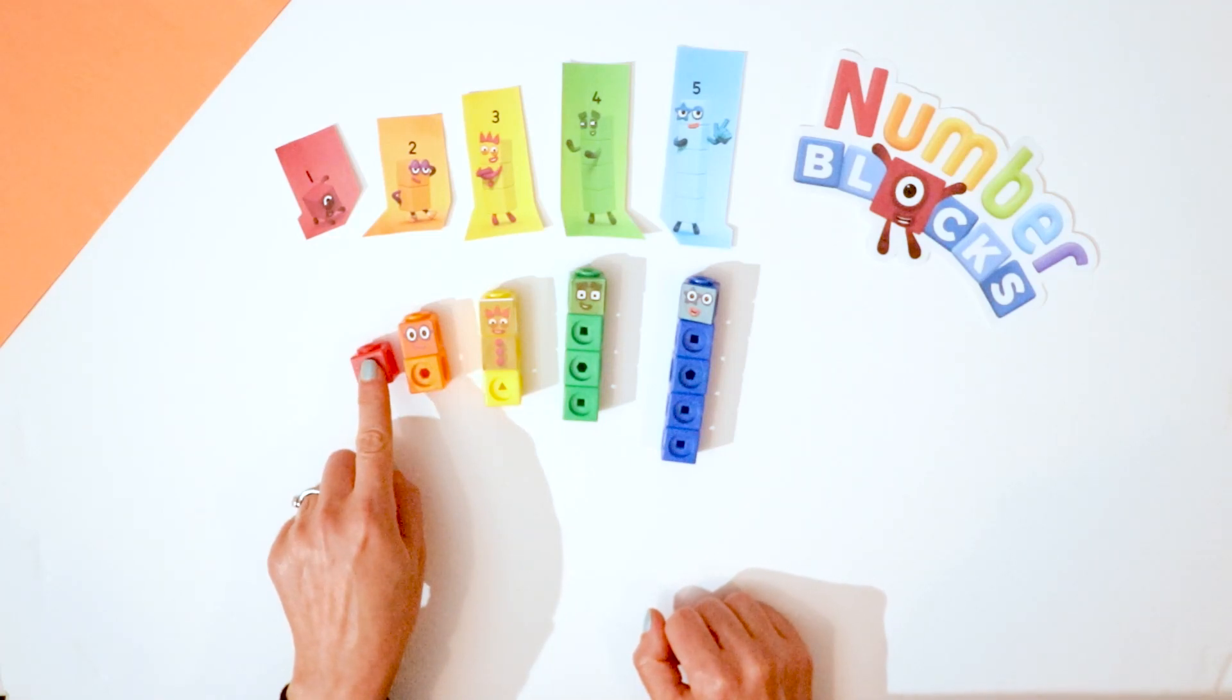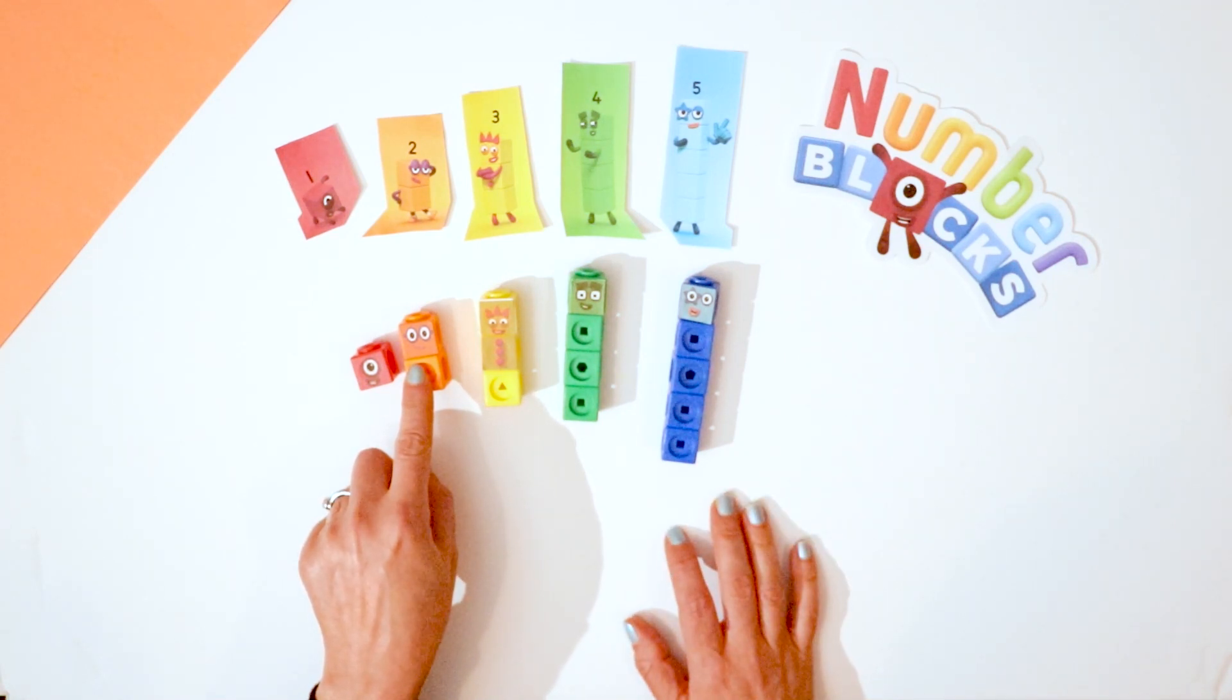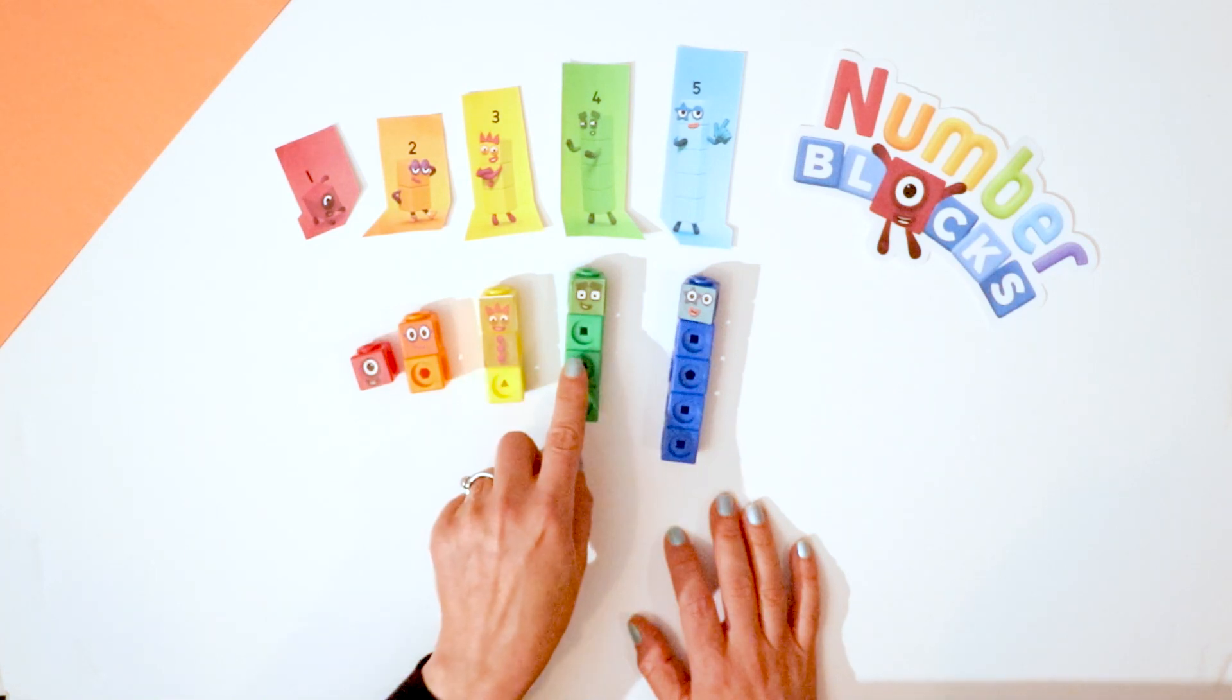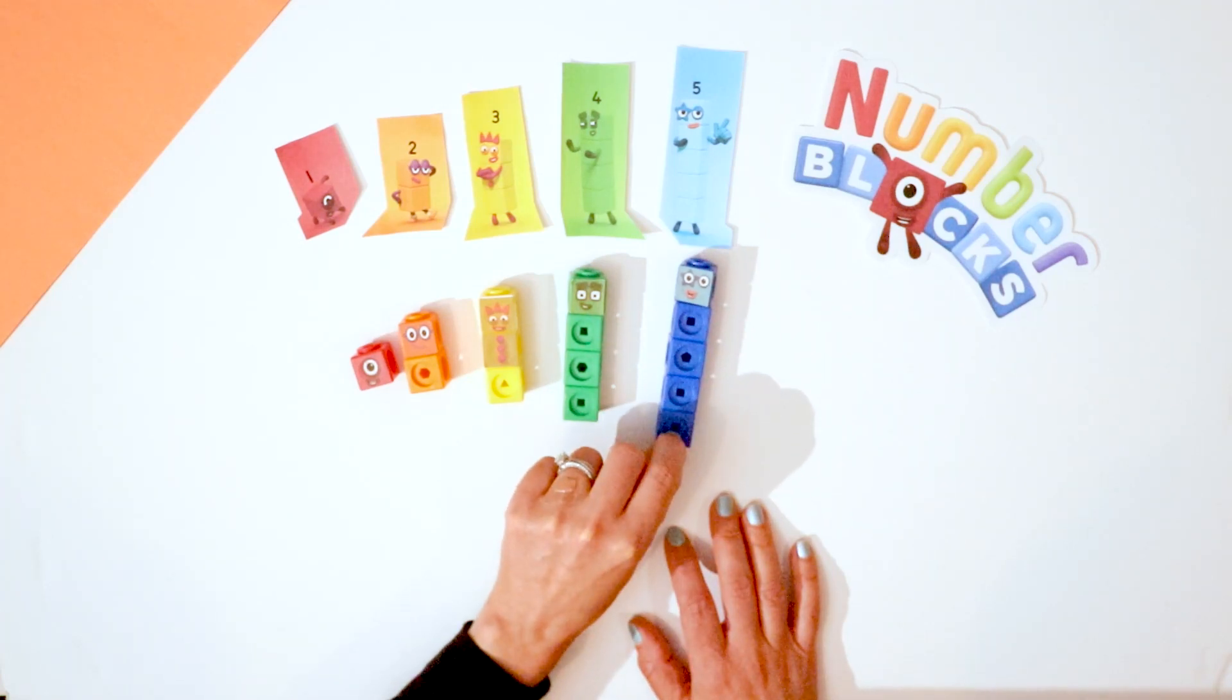One plus one equals two. One plus two equals three. One plus three equals four. One plus four equals five. One plus five equals six.